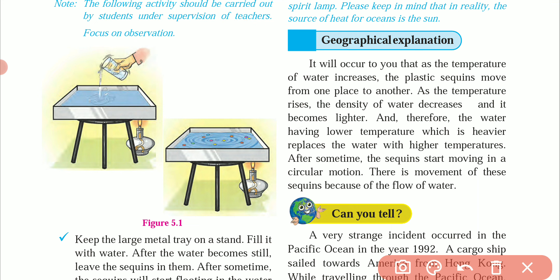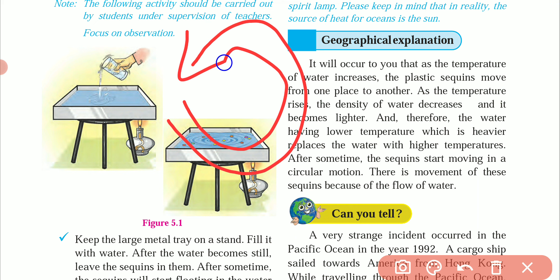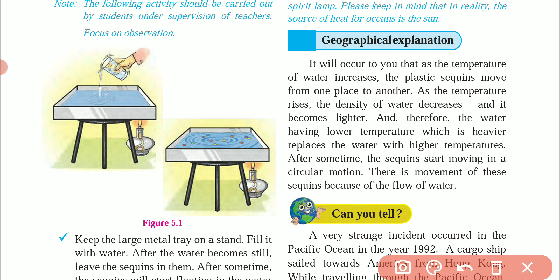Therefore, the water having low temperature, which is heavier, replaces the water with the higher temperature. After some time, the sequins start moving in a circular motion, so the water flows in a circular motion. The current created in the tray moves in a circular motion because the water heats, then cools, then warms again — and the circle keeps running. The sequins move because of the flow of the water.